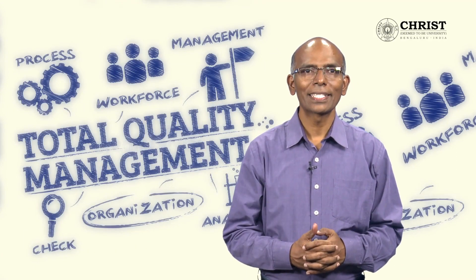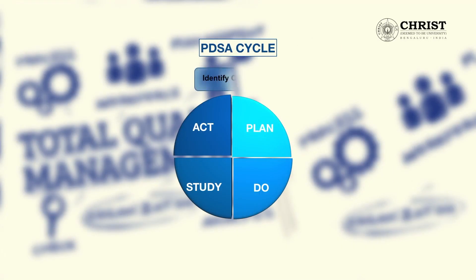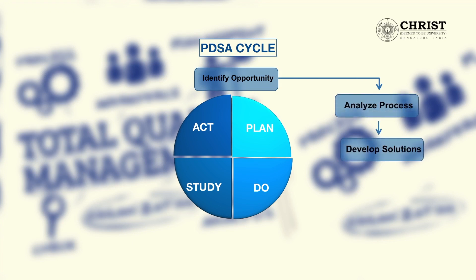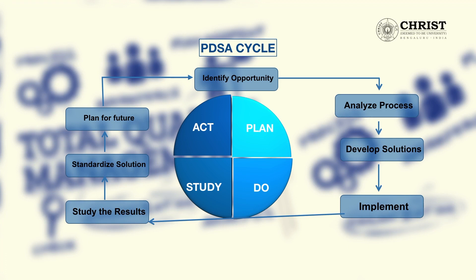Coming back to the PDSA cycle as a problem-solving method, as shown in the diagram, it consists of 7 phases: Phase 1 — identify the opportunity; Phase 2 — analyze the process; Phase 3 — develop the optimal solution; Phase 4 — implement; Phase 5 — study the results; Phase 6 — standardize the solution; and Phase 7 — plan for the future cycle. As you can see in the diagram, these phases interact with the Plan Do Study Act cycle.